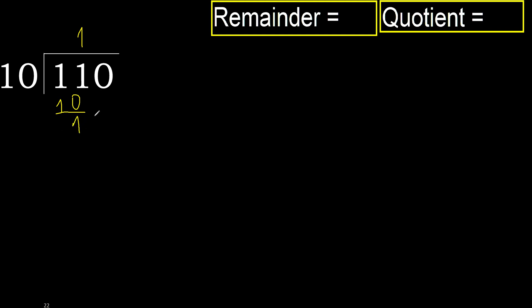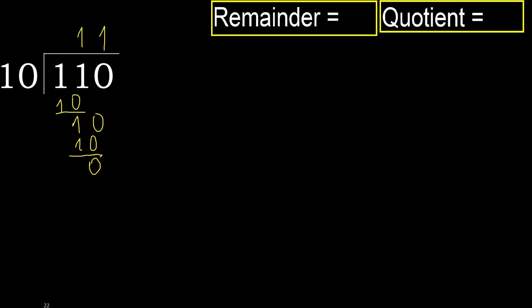Next, 10. 10 multiplied by 1 is 10, it is not greater. Subtract: 10 minus 10 is 0. Next, that is not a number, therefore finish it.